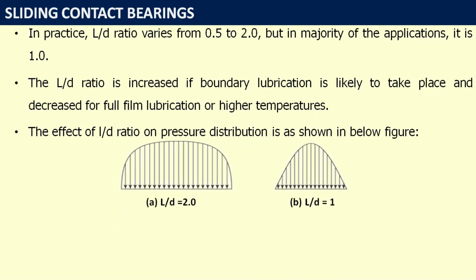The effect of L/D ratio on pressure distribution is shown in the figure. If the L/D ratio is larger, we have more uniform pressure distribution over the length. In short journal bearings, there is not much uniform pressure distribution over the bearing length.